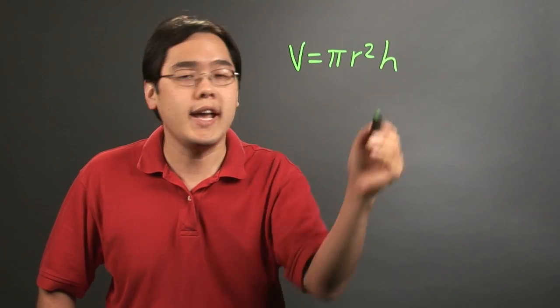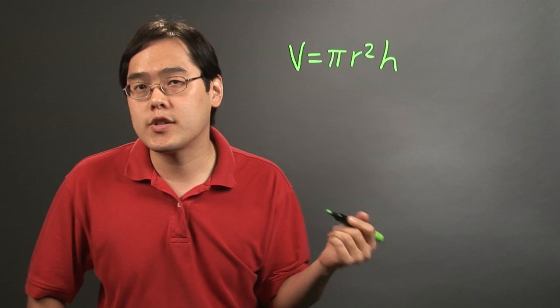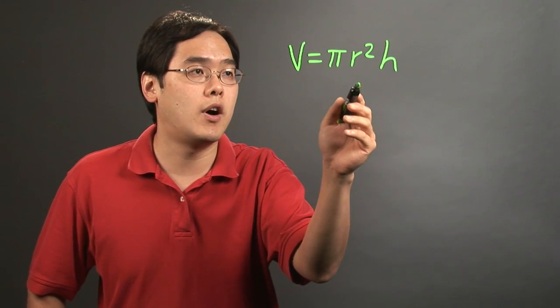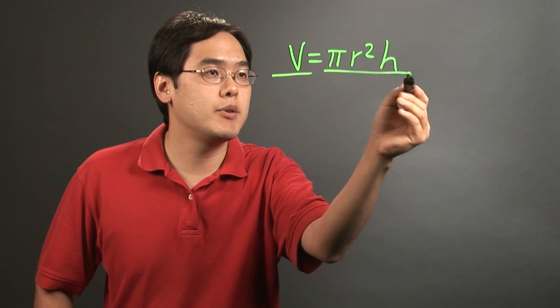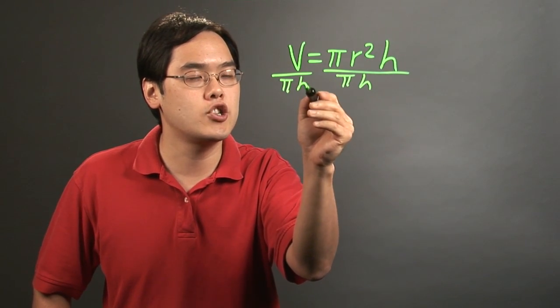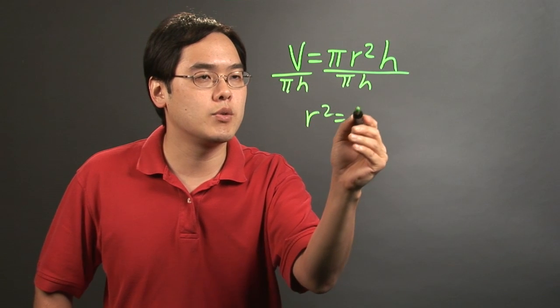Now your objective here is to find the radius first before finding the diameter. So what you want to do is solve for r. In this particular case, go ahead and divide both sides by the non-r related terms, so in this case it'd be πh. So you have r² = V/πh.